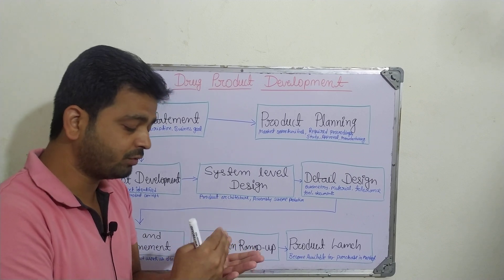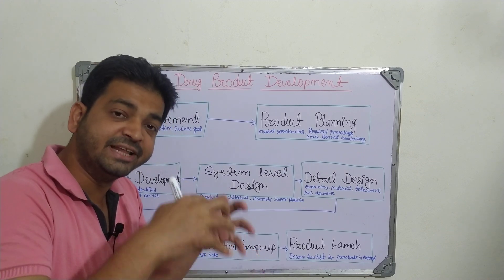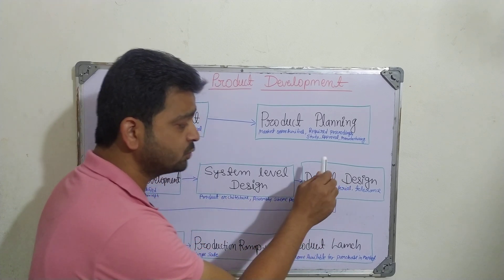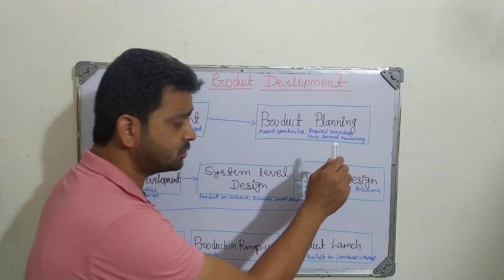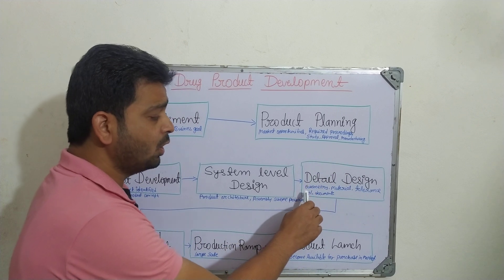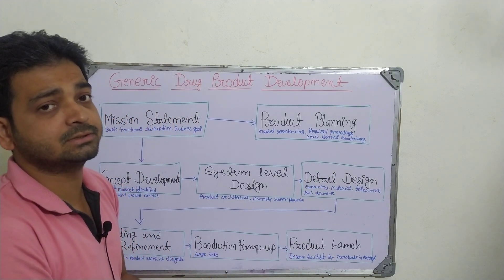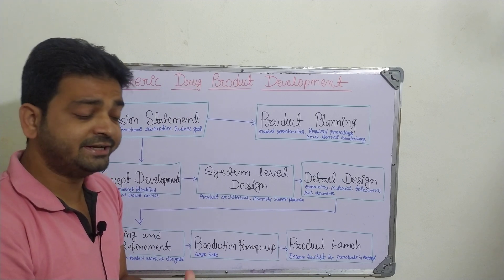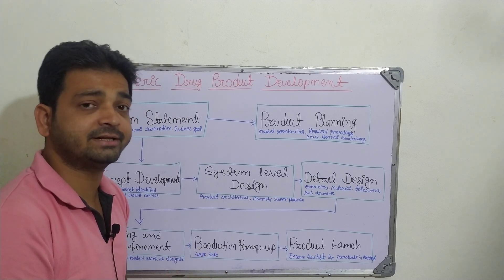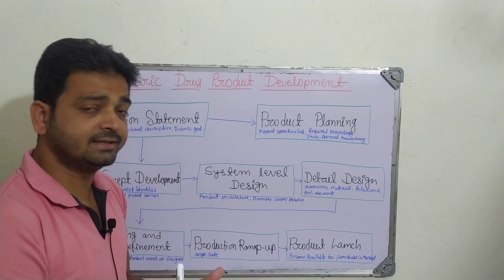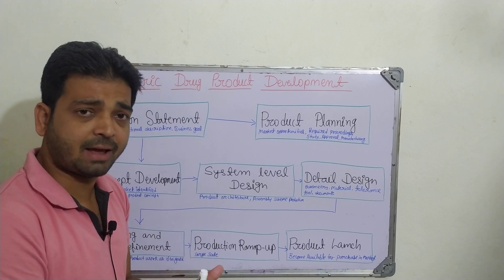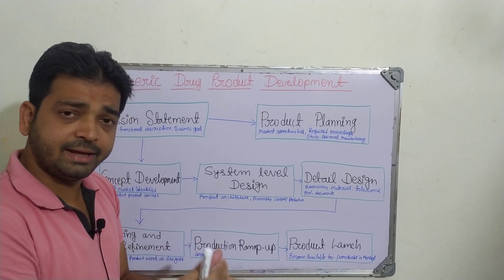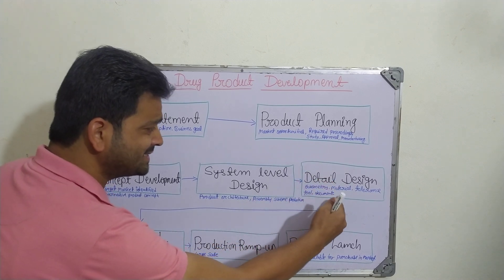Then we have to go for detail design. Once the outer schematic design is completed, we need to go into each and every step in depth — like the geometry of the product, materials to be used, what may be the tolerance, what kind of tools and techniques we are going to use, and what documents are required. The data and evidence we have to generate — such as bioequivalence, same strength, stability, performance, ADME, and all those.